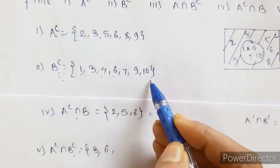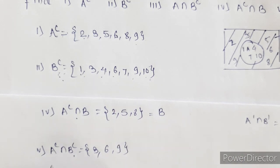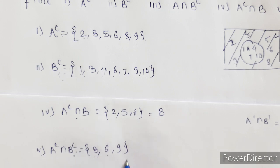9 is common. So in A complement intersection B complement we have 3, 6, and 9.